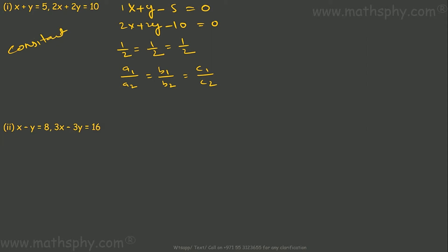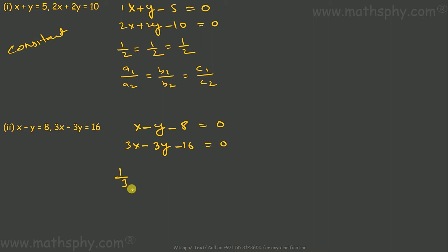For the second pair: x - y - 8 = 0 and 3x - 3y - 16 = 0. So a1/a2 is 1/3, b1/b2 is -1/-3 which is 1/3, and c1/c2 is -8/-16 which is 1/2. The first two ratios are equal but the third is not equal, so this gives parallel lines — meaning inconsistent.